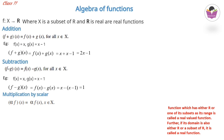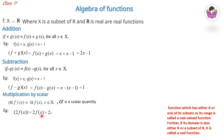For scalar multiplication: (αf)(x) = α · f(x), where α is a scalar. Example: 2f(x) = 2 · x = 2x.